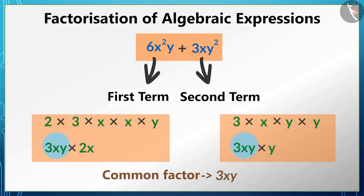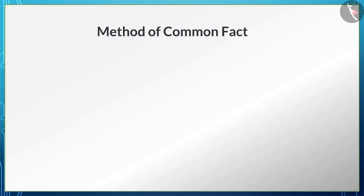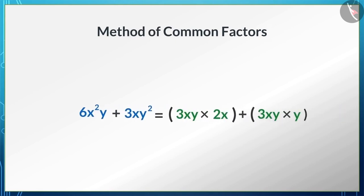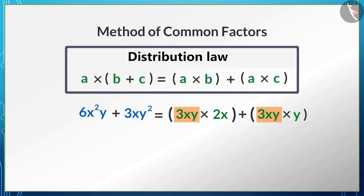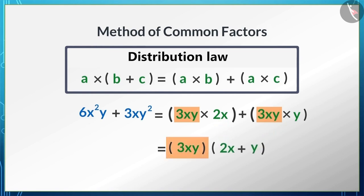Now we can write this algebraic expression as a product of its factors. We can see that 3XY is the common factor, so we write 3XY times (2X + Y). Using the distributive law, 3XY times (2X + Y) is the factored form of the given algebraic expression.